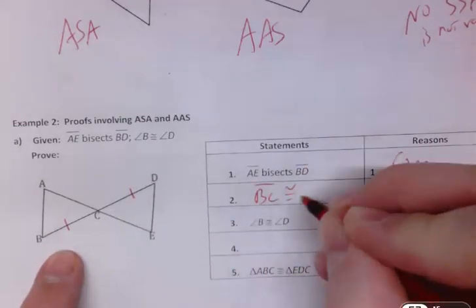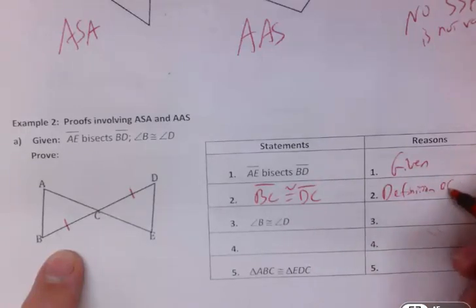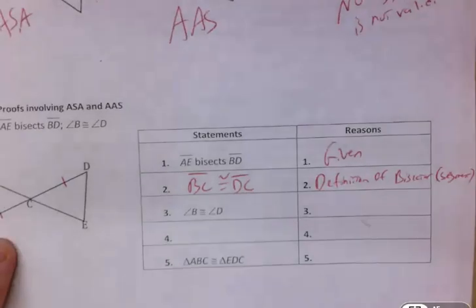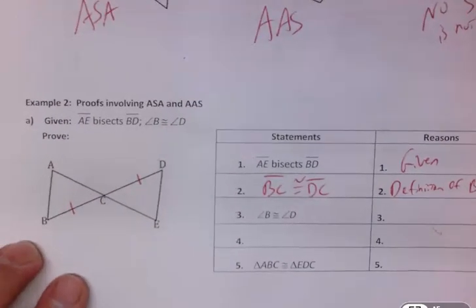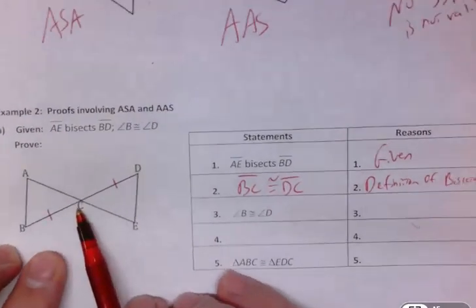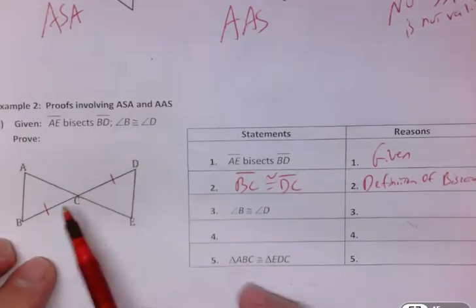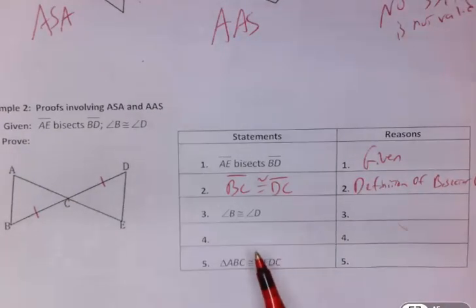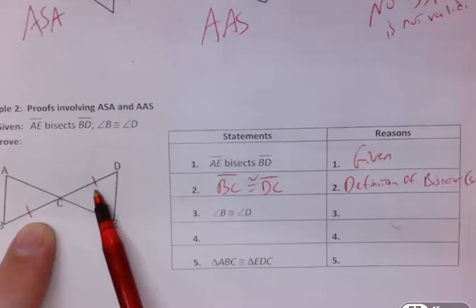So we would actually put that in our proof: BC is congruent to DC, and we would say the definition of bisector. And technically it's a segment bisector because in the other lesson we had an angle bisector, but I could be kind of flexible here. If you said by the definition of midpoint instead, to me that means you still understand what's happening because AE has to cut BD at the midpoint. The bottom line is, do you understand why these two pieces would have to be congruent?